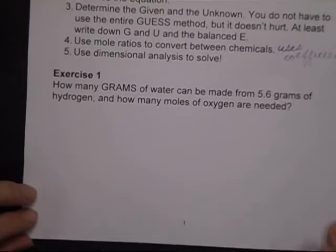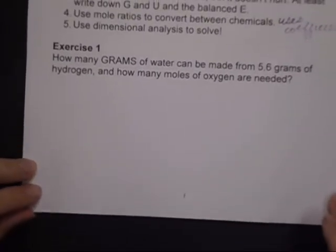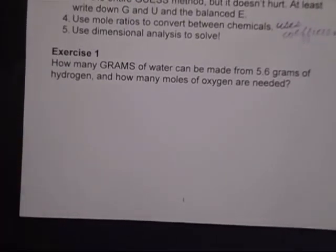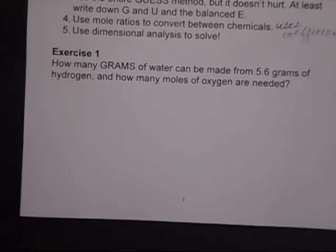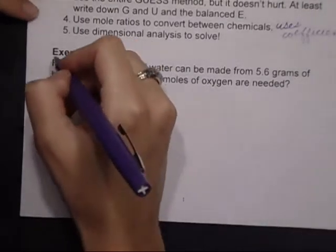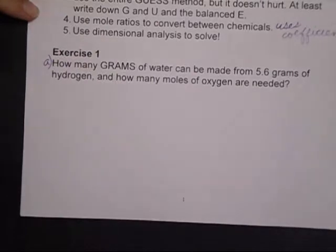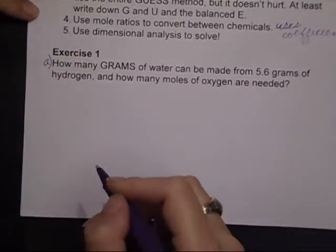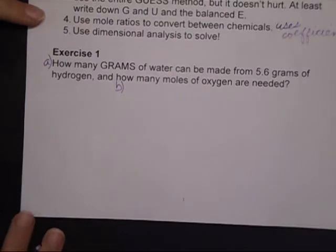All right, so exercise one: How many grams of water can be made from 5.6 grams of hydrogen? So that's part A, and how many moles of oxygen are needed? So we have a two-part problem here.